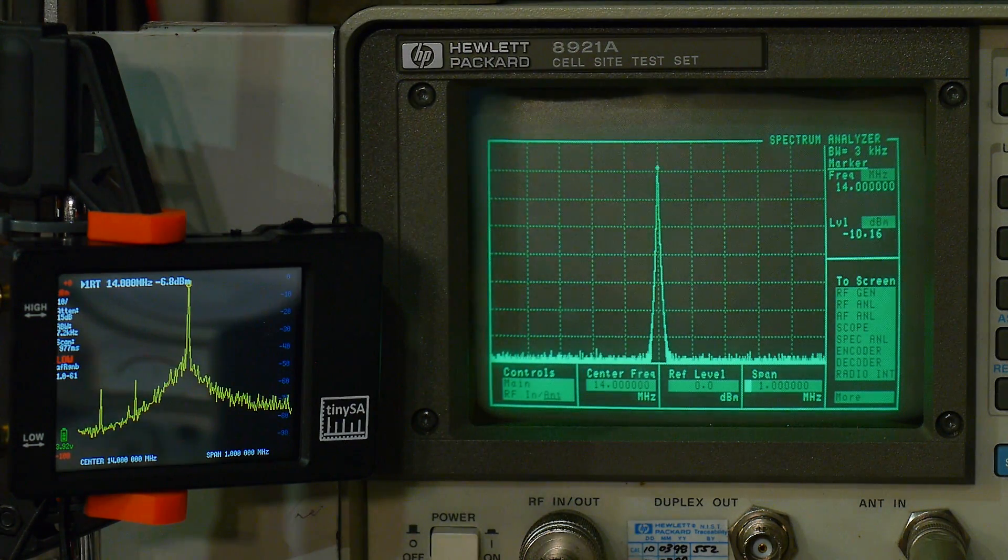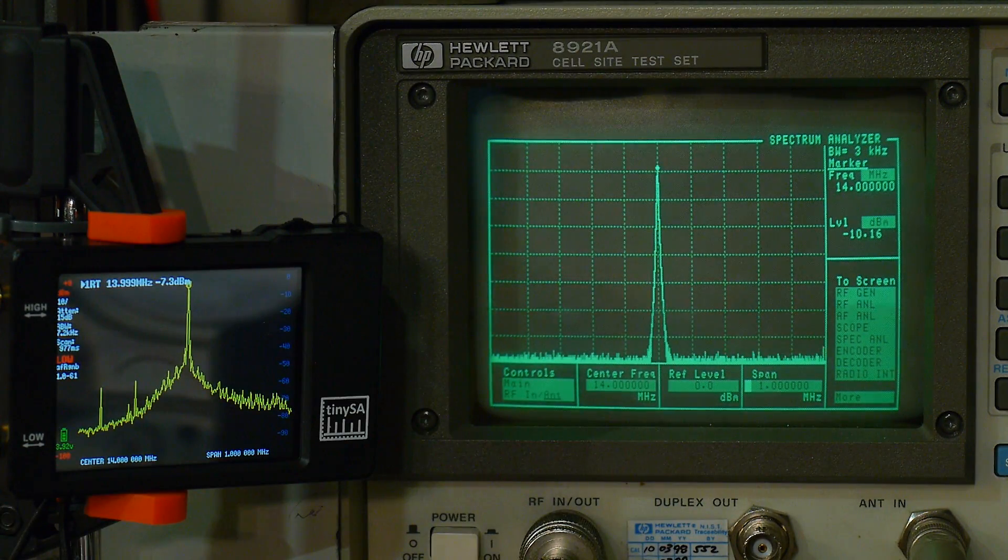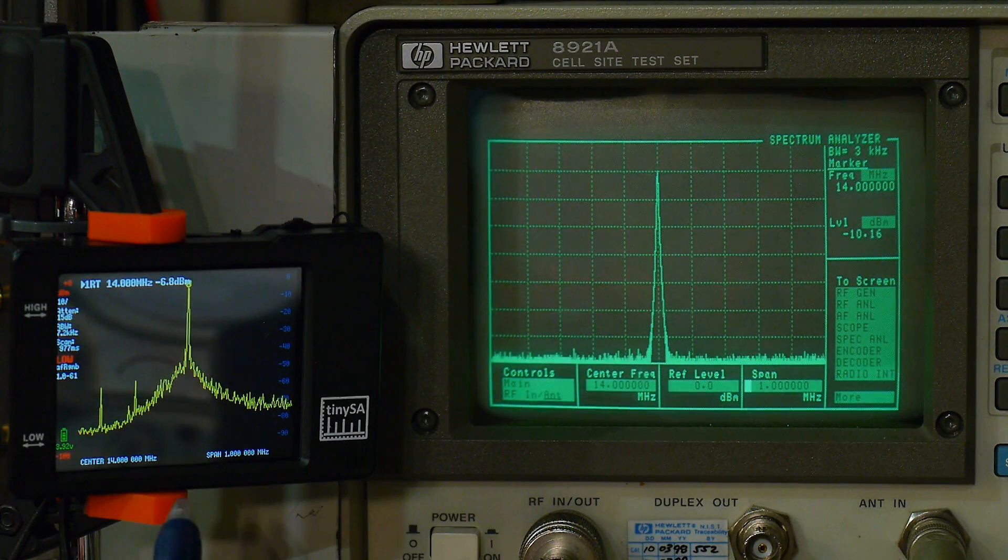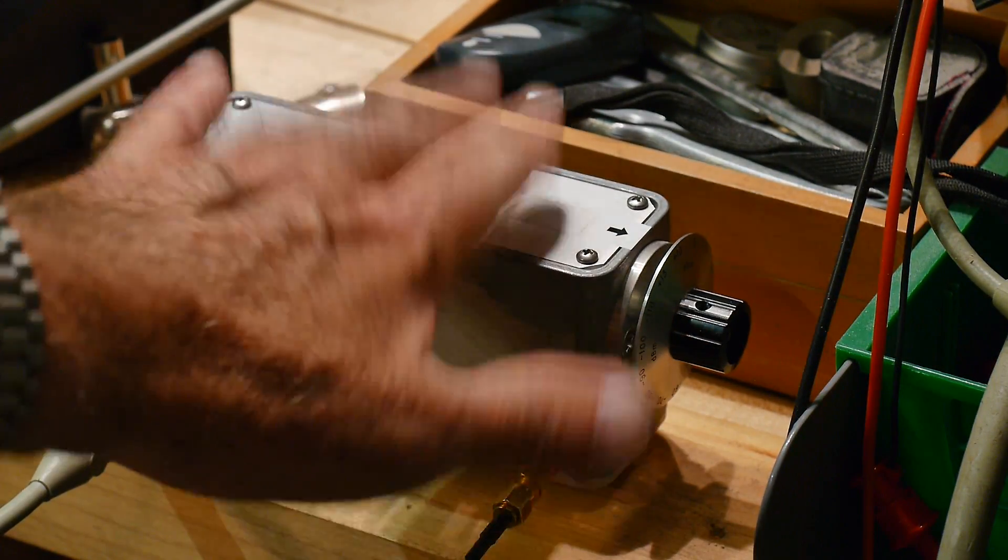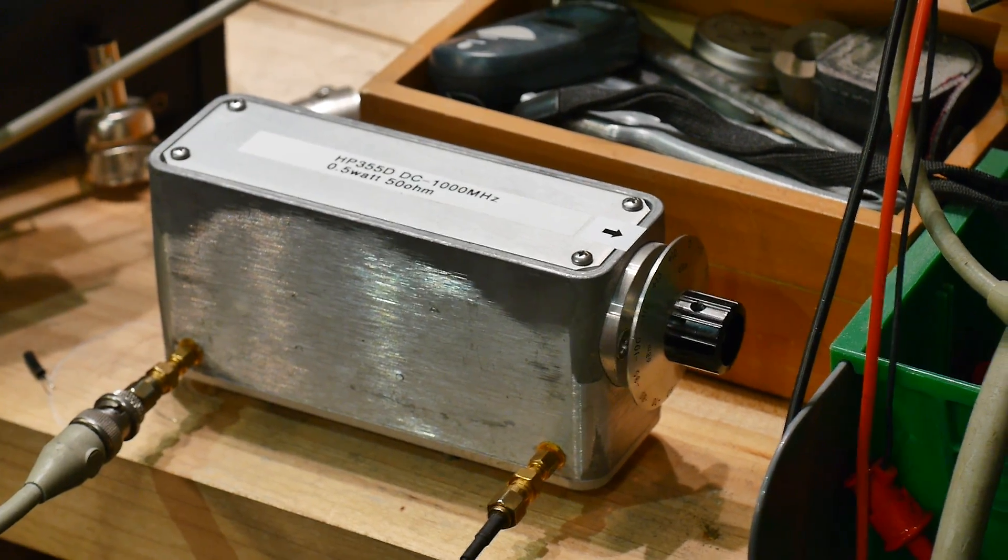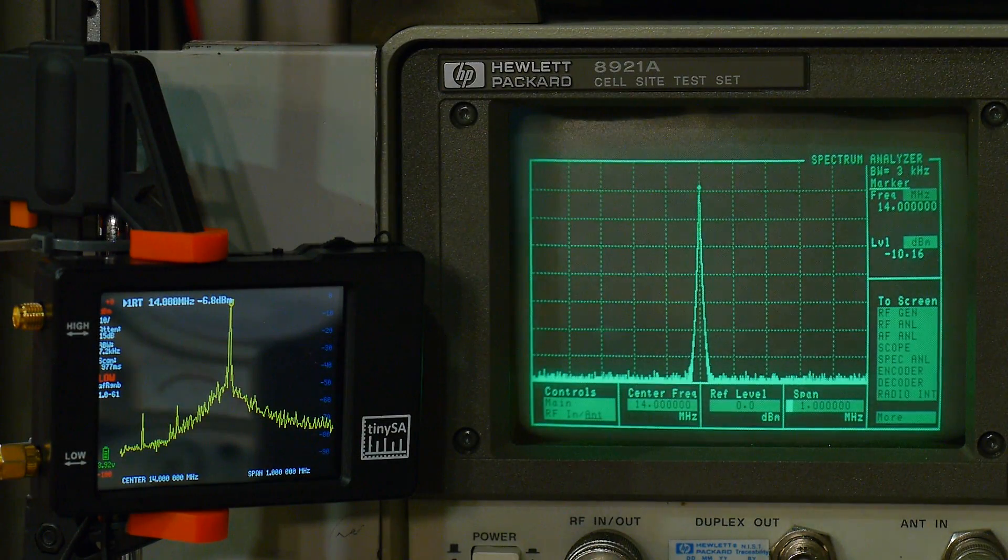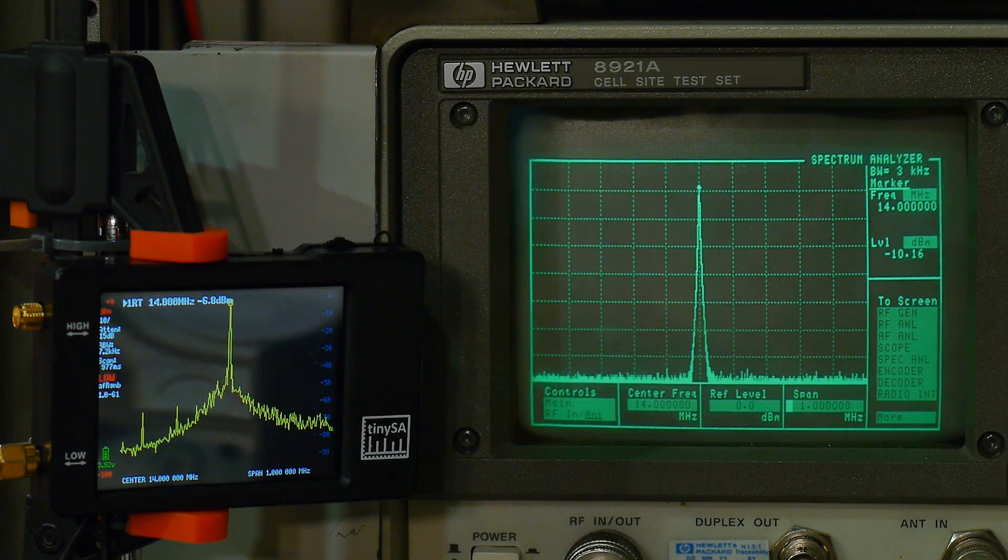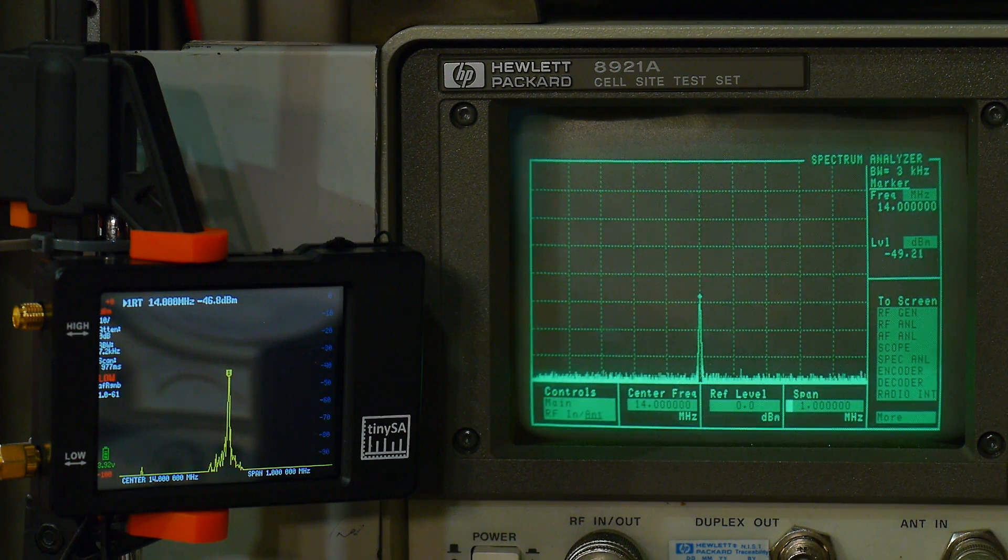For this next test I want to test the dynamic range. I'm inputting a 14 megahertz signal and I'm going to be lowering the signal. We have it set to center frequency of 14 megahertz with a span of one megahertz on both. The signal is right now at zero dBm and I've run it through a precision attenuator, a 120 dB attenuator, so we can go quite low with that.